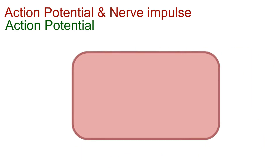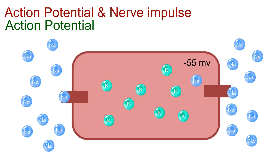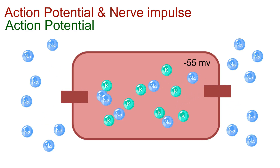At threshold, voltage-gated sodium channels in the membrane suddenly open. Sodium ions, which are more concentrated outside, rush inside the neuron. As positive sodium ions enter, the inside of the neuron becomes less negative, and soon even positive.